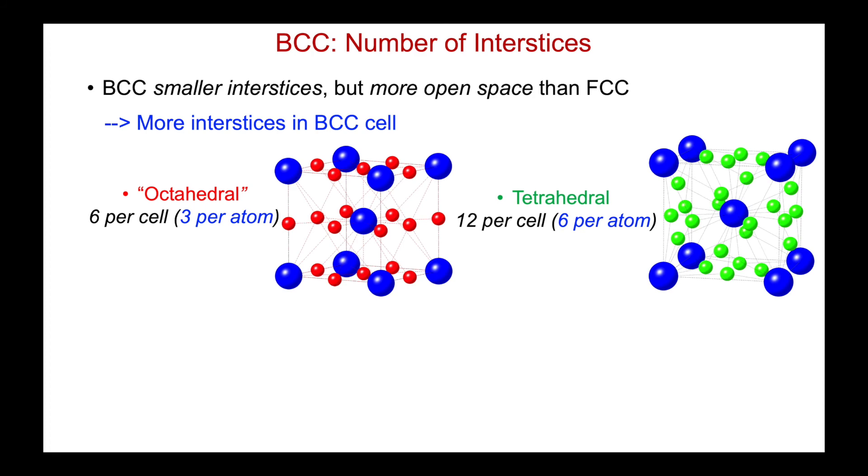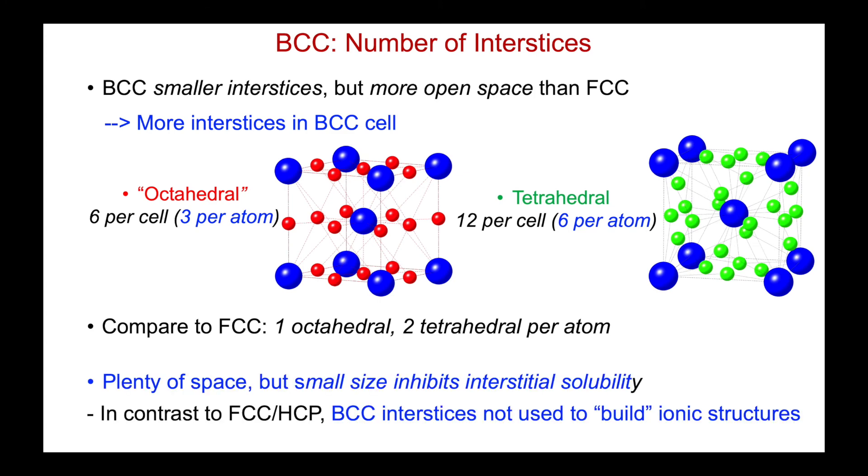And so while the voids are much, much smaller than the FCC structures, there are many, many more of them. And that is why, or that reconciles, the larger total space that's available in BCC. It just comes in much smaller eloquence. And the small size of the interstitial sites in the BCC structure is what limits the interstitial solubility.